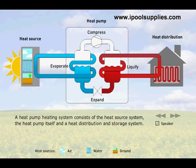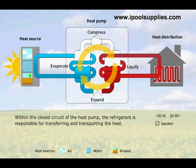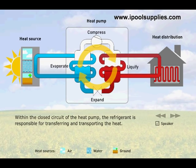A heat pump heating system consists of the heat source system, the heat pump itself, and a heat distribution and storage system. Within the closed circuit of the heat pump, the refrigerant is responsible for transferring and transporting the heat.